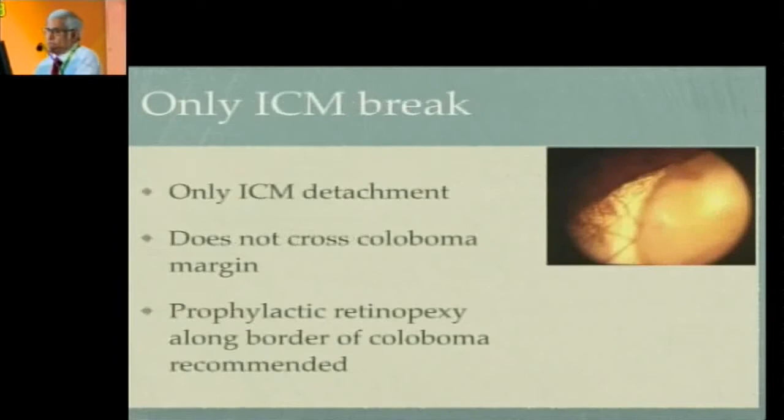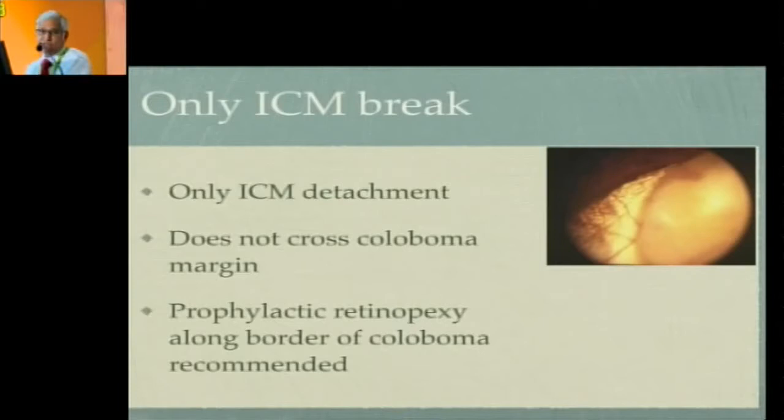If there is only an ICM break — the other end of the spectrum — then you get only an ICM detachment. The ICM detachment doesn't spill over to the normal retina because there is no communication between the sub-ICM space and the subretinal space at the junction of least resistance. In these cases, a prophylactic laser along the coloboma margin will probably be useful to prevent this from spilling into the subretinal space later on.